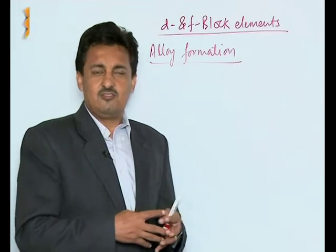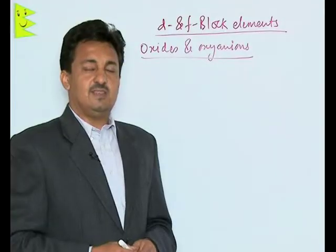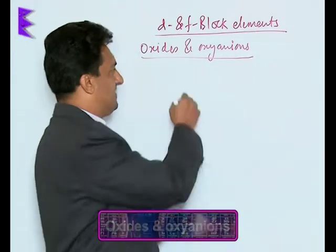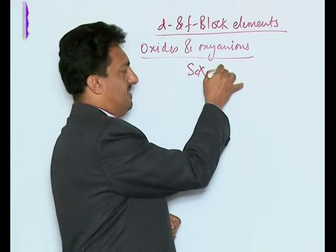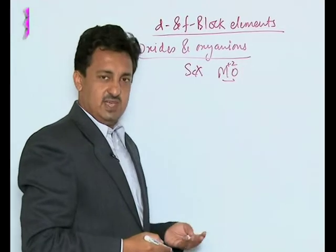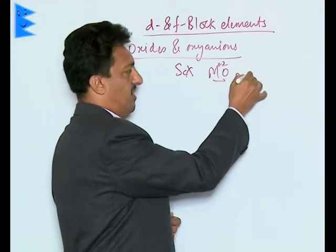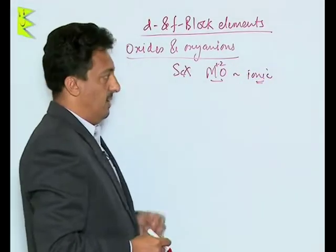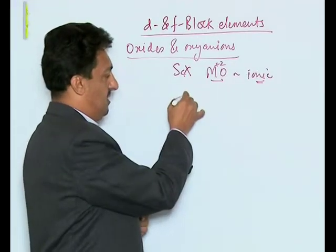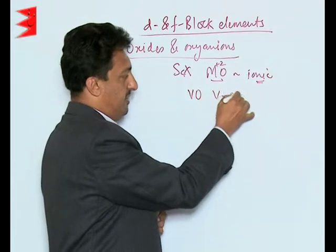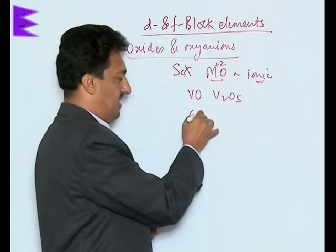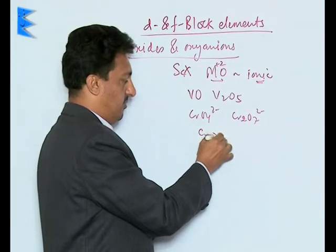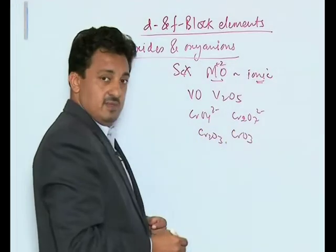Transition metals, except scandium, all exist in the +2 oxidation state forming MO-type oxides, which are ionic in nature. They can also go to higher oxidation states — for example, vanadium goes from VO up to V₂O₅, and chromium can form CrO₄²⁻, Cr₂O₇²⁻, Cr₂O₃, and CrO₃.